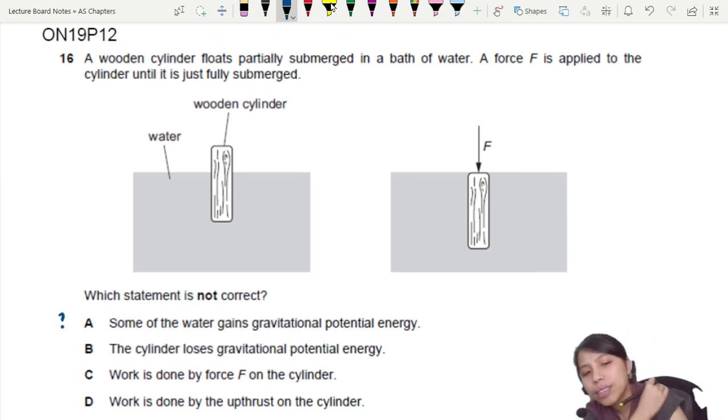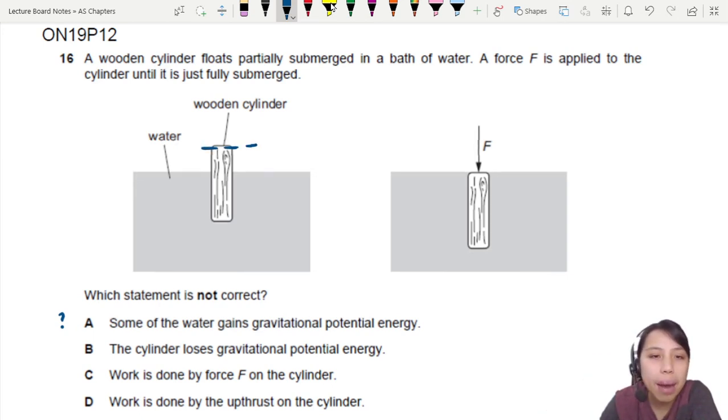Statement B says the cylinder loses GPE. That's correct because when you are high up, you have high GPE. GPE is related to mgh. The higher the height, the higher the GPE.